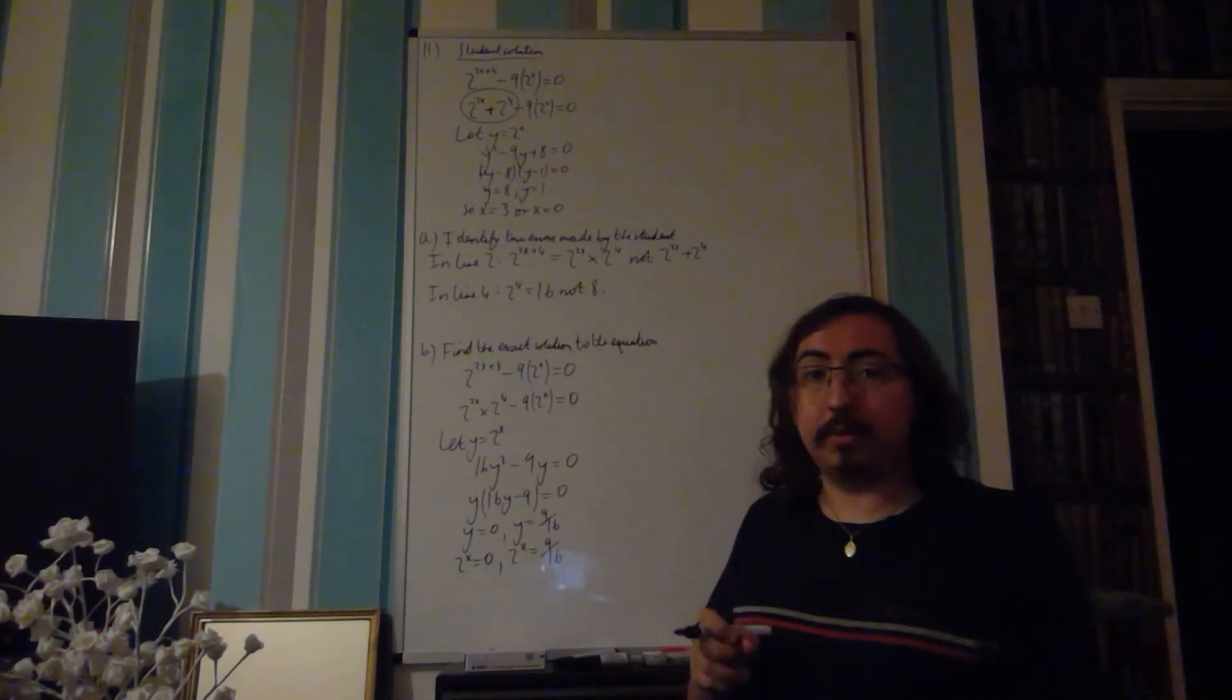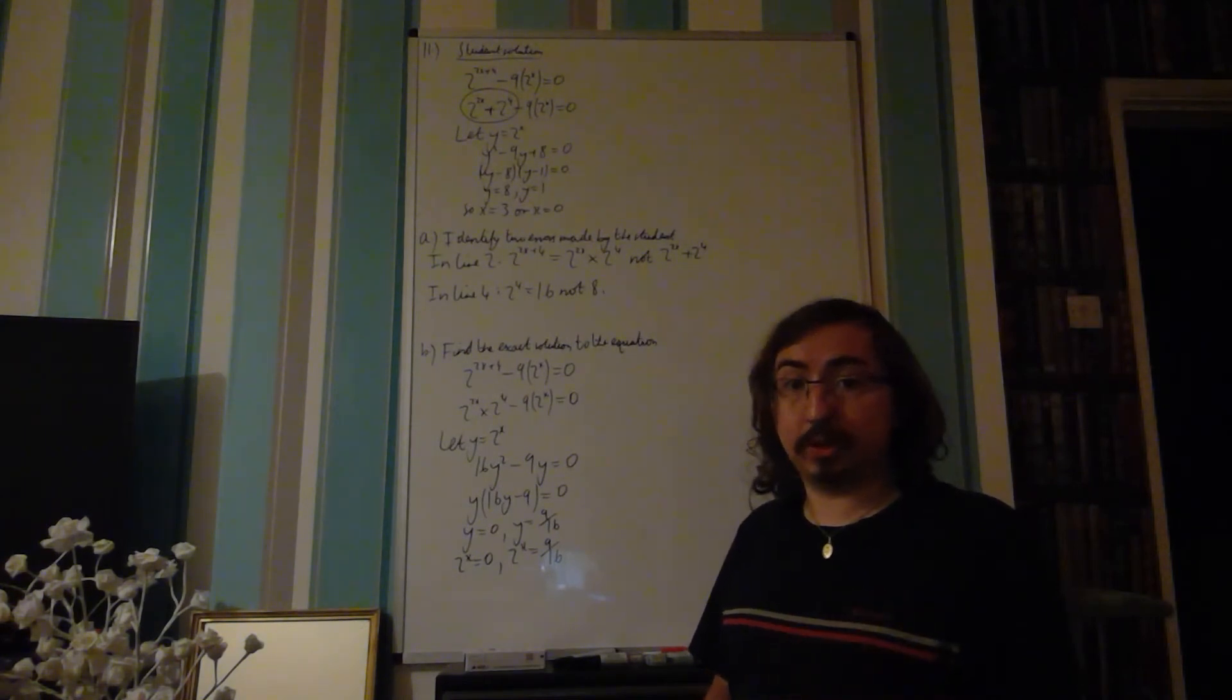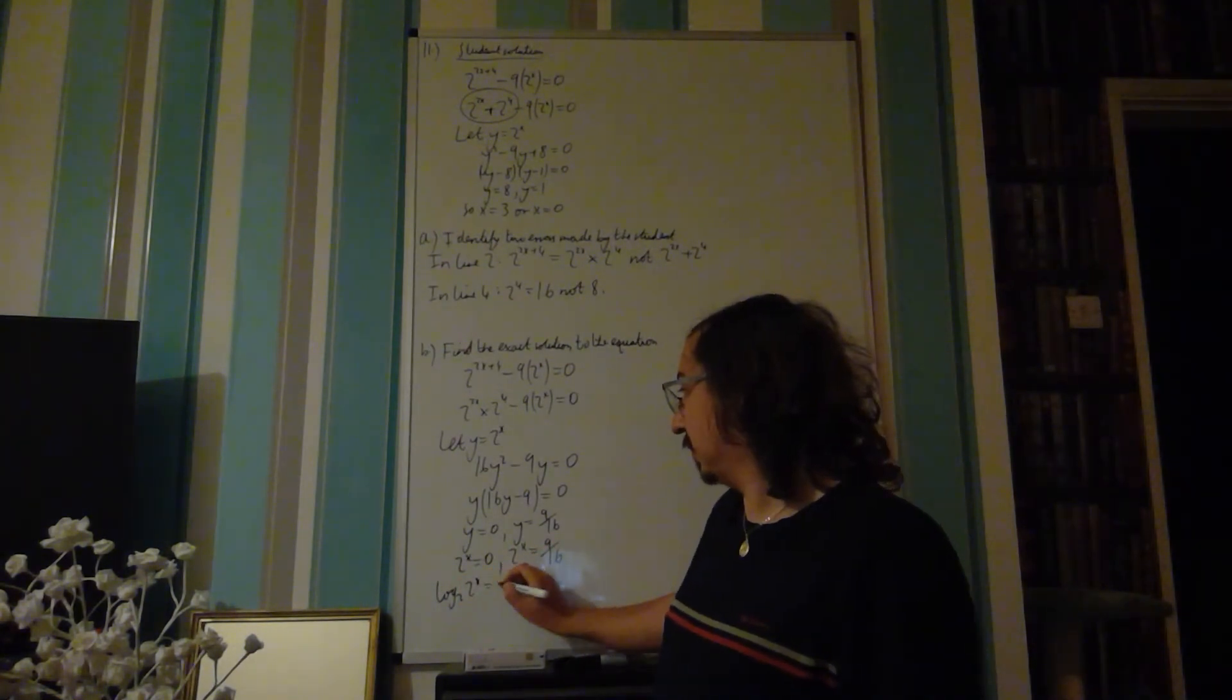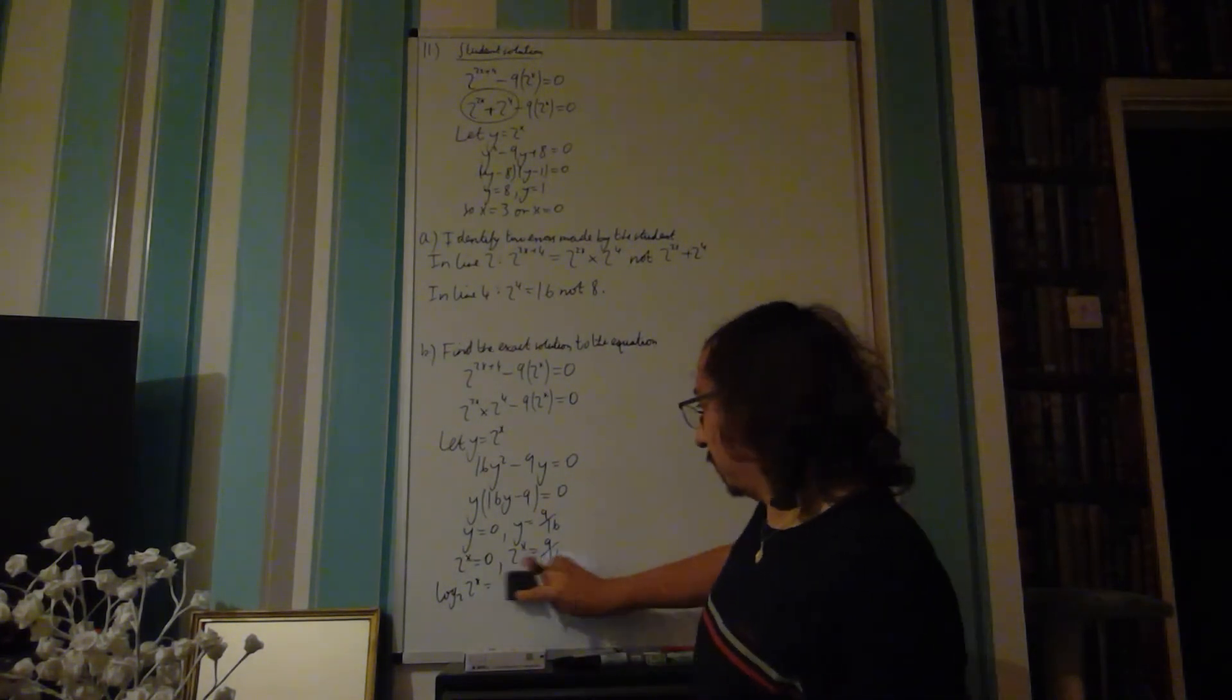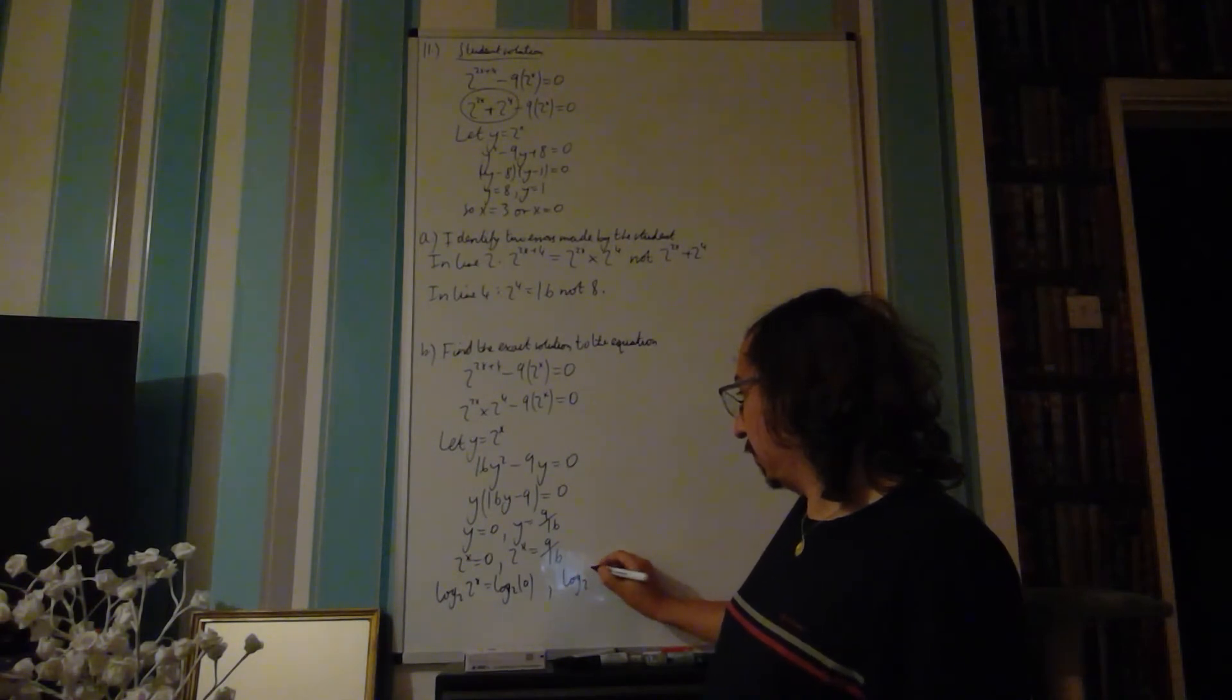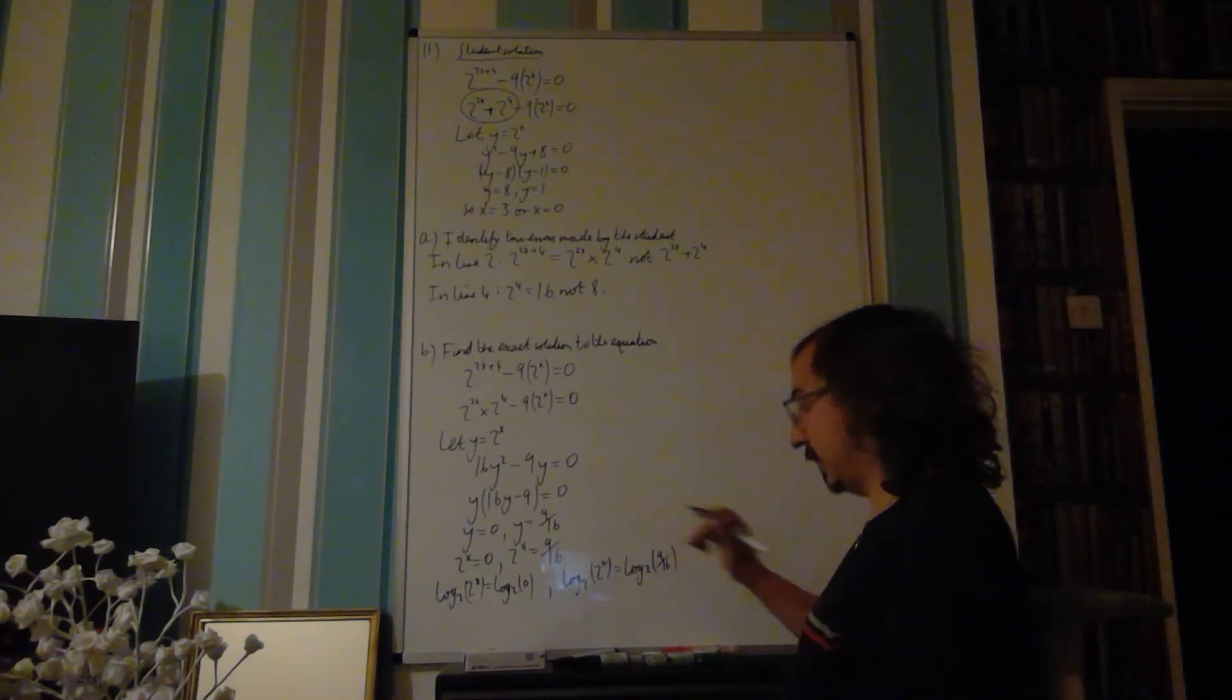Now, to solve this, we have to bring in logarithms. Because the exponential is a 2 there, the easiest one is to bring in log to base 2. So we can take log to base 2 of 2 to the x is equal to 0, and log to base 2 of 2 to the x is equal to log to base 2 of 9 over 16.